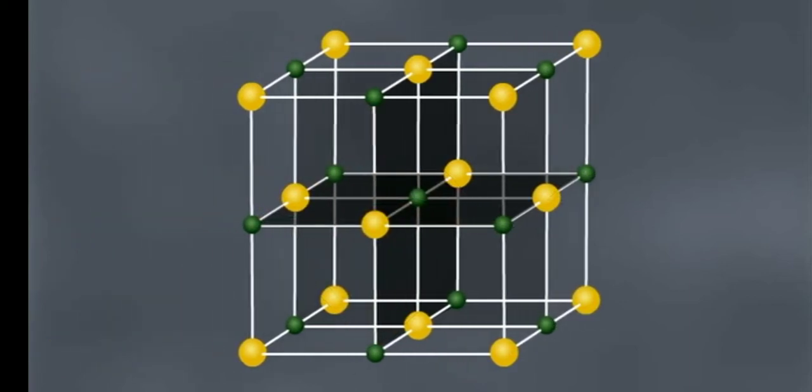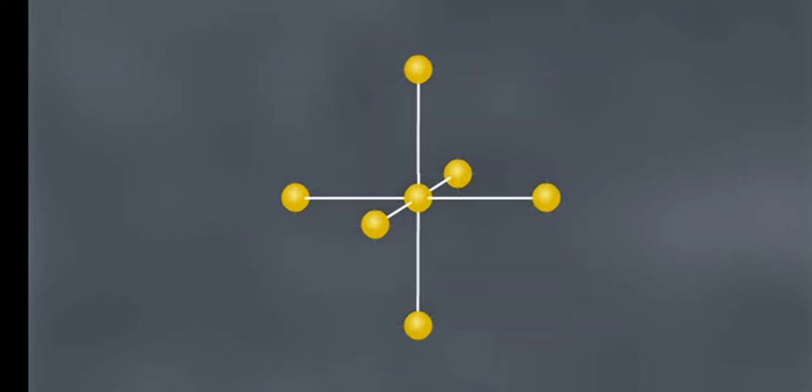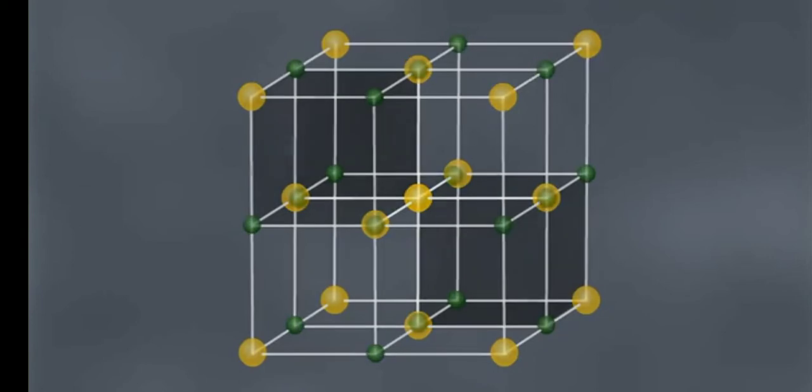Such a regular arrangement of ions is called a lattice. The oppositely charged ions are arranged in a regular manner in the lattice.